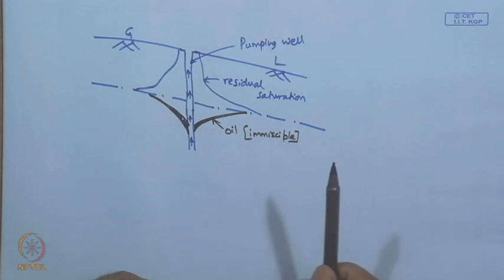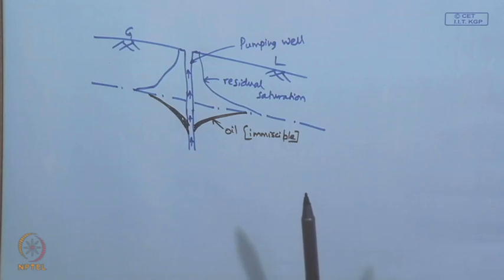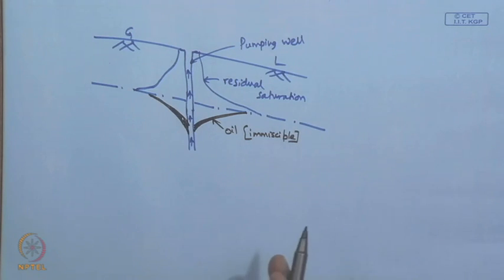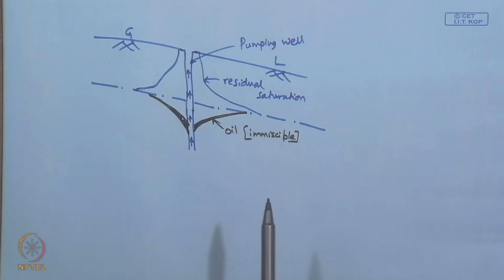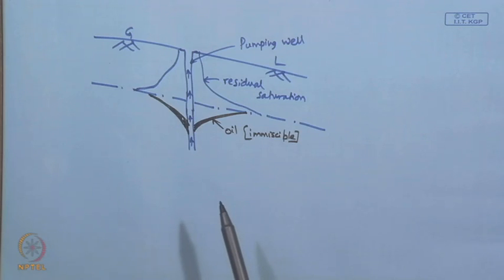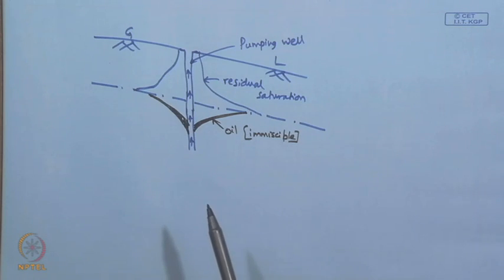Coming to oil field brines: because brine is a very saline solution, it spreads and increases the salinity of groundwater, and therefore needs to be tackled differently — pumping-type treatment may not be suitable. In the next lecture, we will discuss groundwater pollution by agricultural sources as well as miscellaneous sources. Thank you.